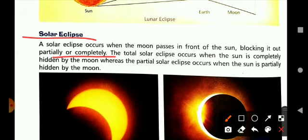It occurs when the sun is completely hidden by the moon, whereas partial solar eclipse occurs when the sun is partially hidden by the moon.